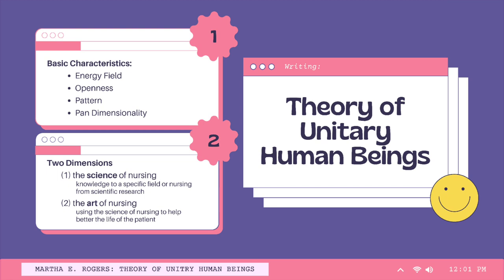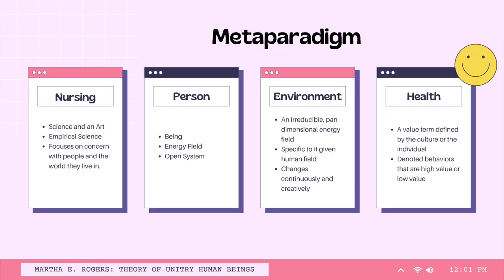Nursing in the science of unitary human beings contains two dimensions: the science of nursing, which is the knowledge specific to the field of nursing that comes from scientific research; and the art of nursing, which involves using the science of nursing creatively to help better the life of the patient. According to the theory of unitary human beings, Rogers defines nursing as a learned profession and is both a science and an art. It is empirical science and, like other sciences, it lies in the phenomena central to its focus. Rogerian nursing focuses on concerns with people and the world they live in.